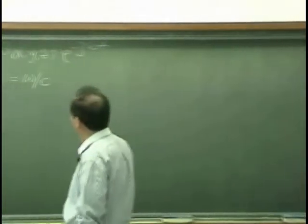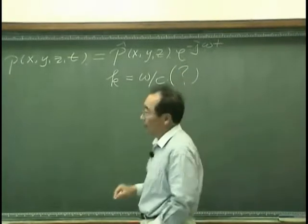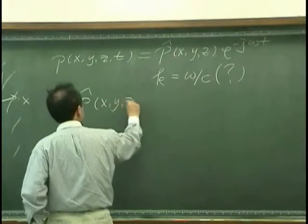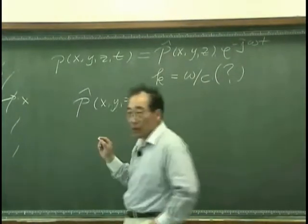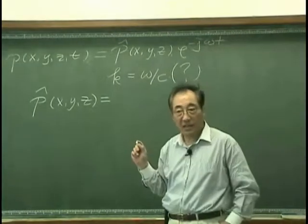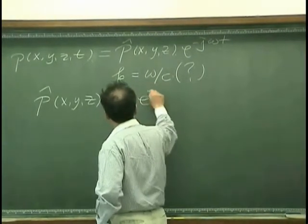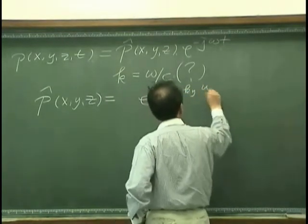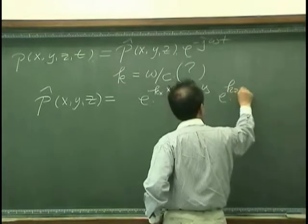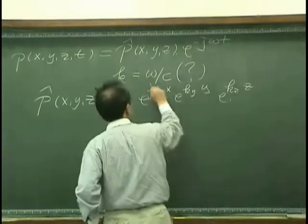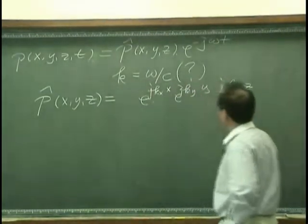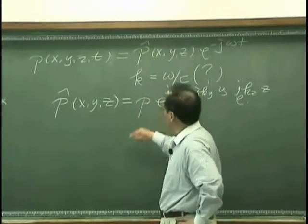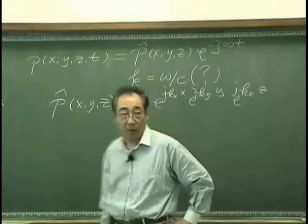What is K? And then we can write this spatial dependent sound pressure can be expressed as components, and that has J. And I may argue that there is some amplitude P0, right?